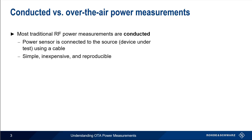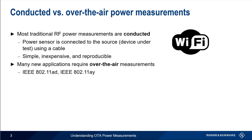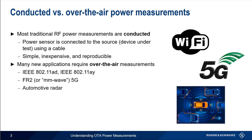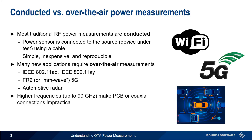However, many newer applications require that power measurements be made over-the-air, or OTA. This includes some of the newer flavors of Wi-Fi, such as 802.11AD and 802.11AY, 5G operating at FR2 or in the so-called millimeter wave bands, and automotive radar. All of these applications operate at extremely high frequencies, and this makes a PCB or coax-based connection impractical. In addition, many of these applications also use beamforming, meaning that in addition to the magnitude of the transmitted power, we're interested in the direction of the power as well.